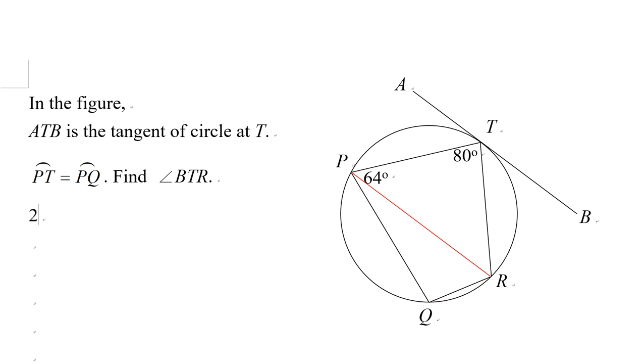First of all, we can find angle TRQ would be 180 degrees minus 64 degrees. That is because opposite angles in a cyclic quadrilateral are supplementary. So you will get angle TRQ would be 116 degrees.